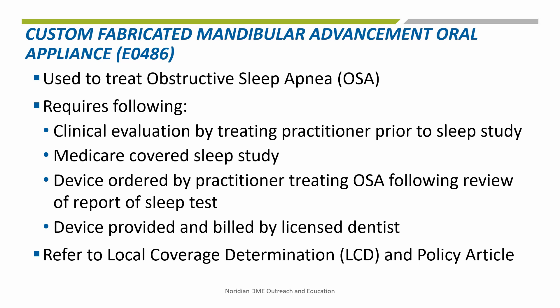Criterion 1: The apnea hypopnea index, or AHI, or respiratory disturbance index, or RDI, is greater than or equal to 15 events per hour, with a minimum of 30 events. Or criterion 2: The AHI or RDI is greater than or equal to 5 and less than or equal to 14 events per hour, with a minimum of 10 events and documentation of excessive daytime sleepiness, impaired cognition, mood disorders, insomnia, hypertension, ischemic heart disease, or history of stroke.